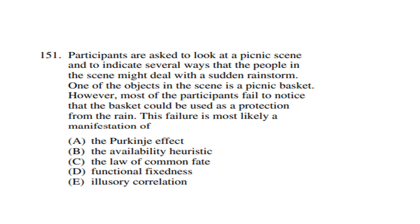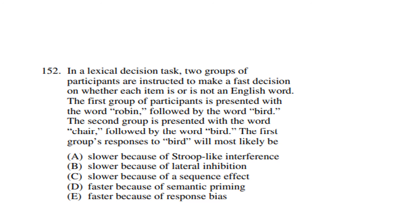Question 151: Participants are asked to look at a picnic scene and indicate ways people might deal with a sudden rainstorm. One object in the scene is a picnic basket, but most participants fail to notice it could be used as protection from the rain. This failure is most likely a manifestation of functional fixedness. Question 152: In a lexical decision task, two groups of participants decide whether each item is an English word. The first group sees the word 'robin' followed by 'bird'; the second sees 'chair' followed by 'bird.' The first group's responses to 'bird' will most likely be faster because of semantic priming.